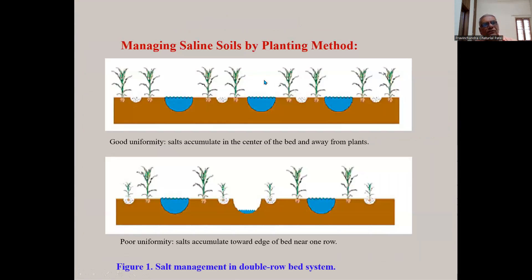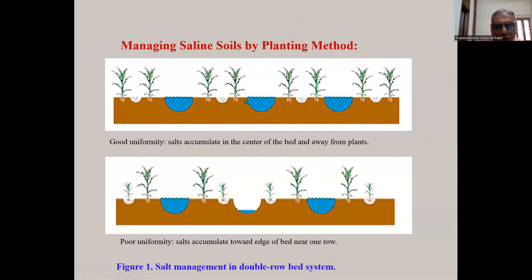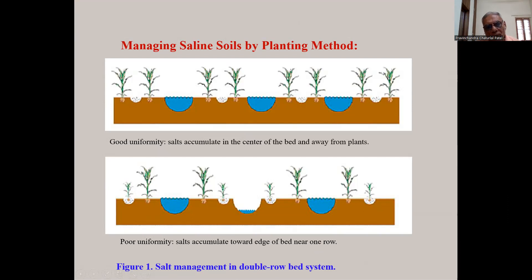Managing saline soils by planting method: with good uniformity, salt accumulates in the center of the bed and away from the plant. With poor uniformity, salt accumulates toward the edge of the bed near one row, but near the plant there is less salt and better growth. Salt management in a double row bed system positions salt away from the crop.